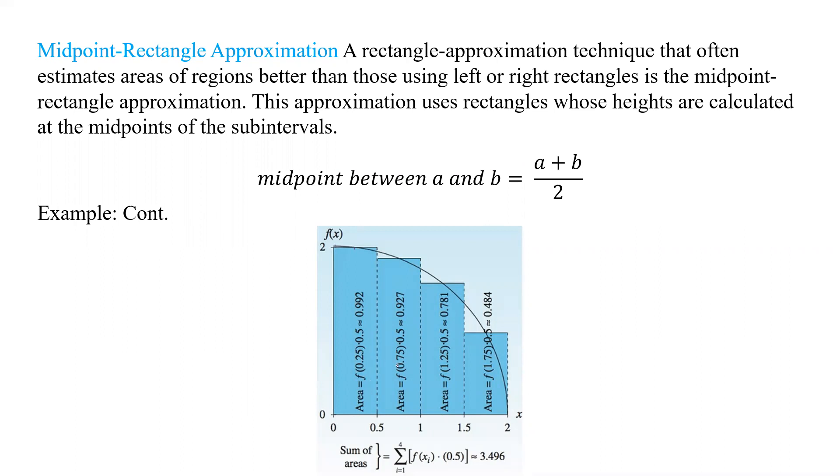Again, our a is 0, our 0.5 is our b, and divide that by 2, we get the 0.25. And then we go from 1 to 1, 0.5 to 1, and we do the same thing, and so we get that 0.75, and we're going to calculate those.